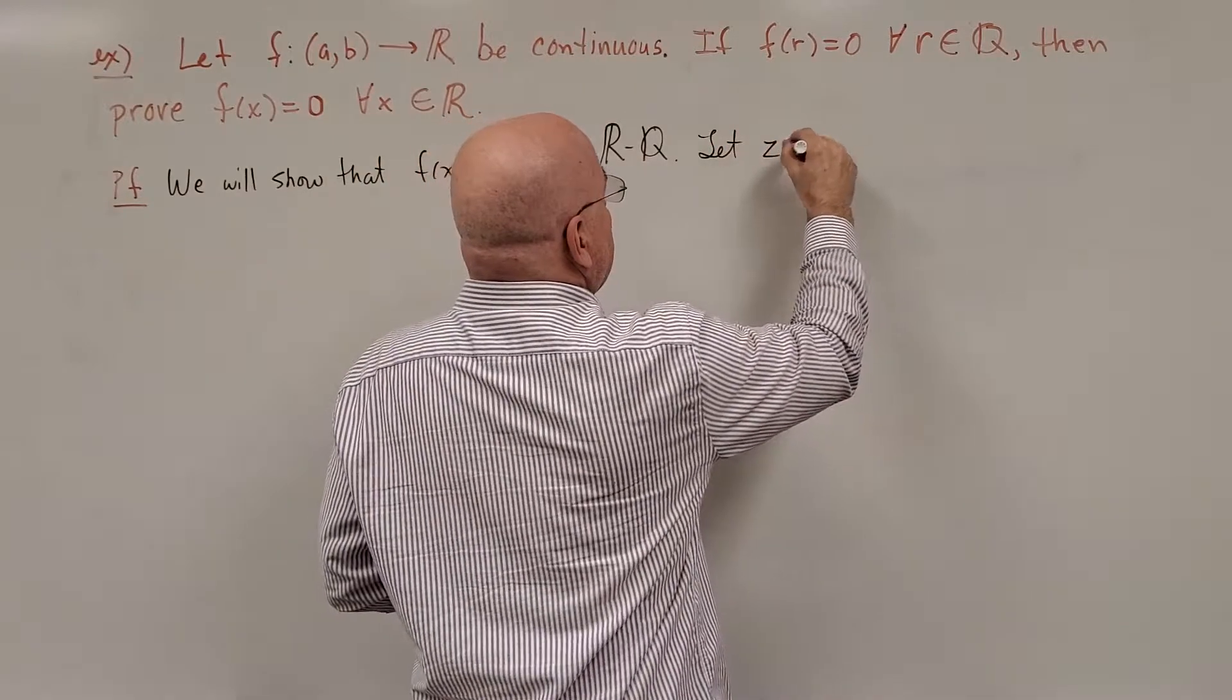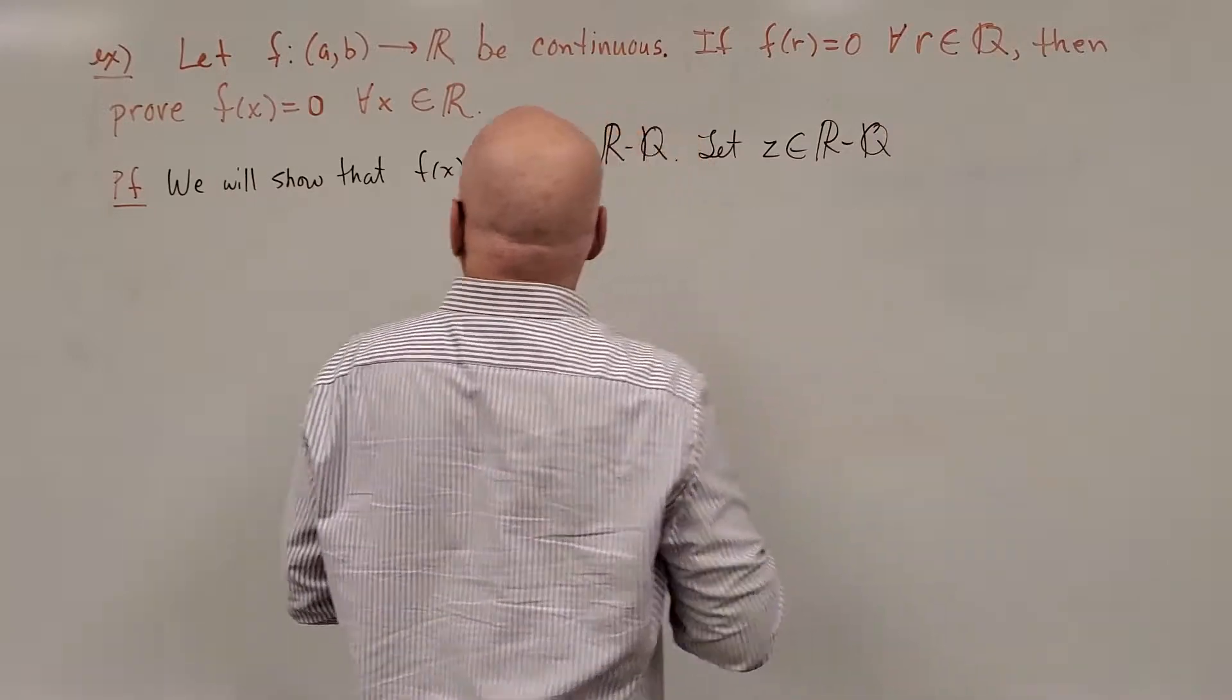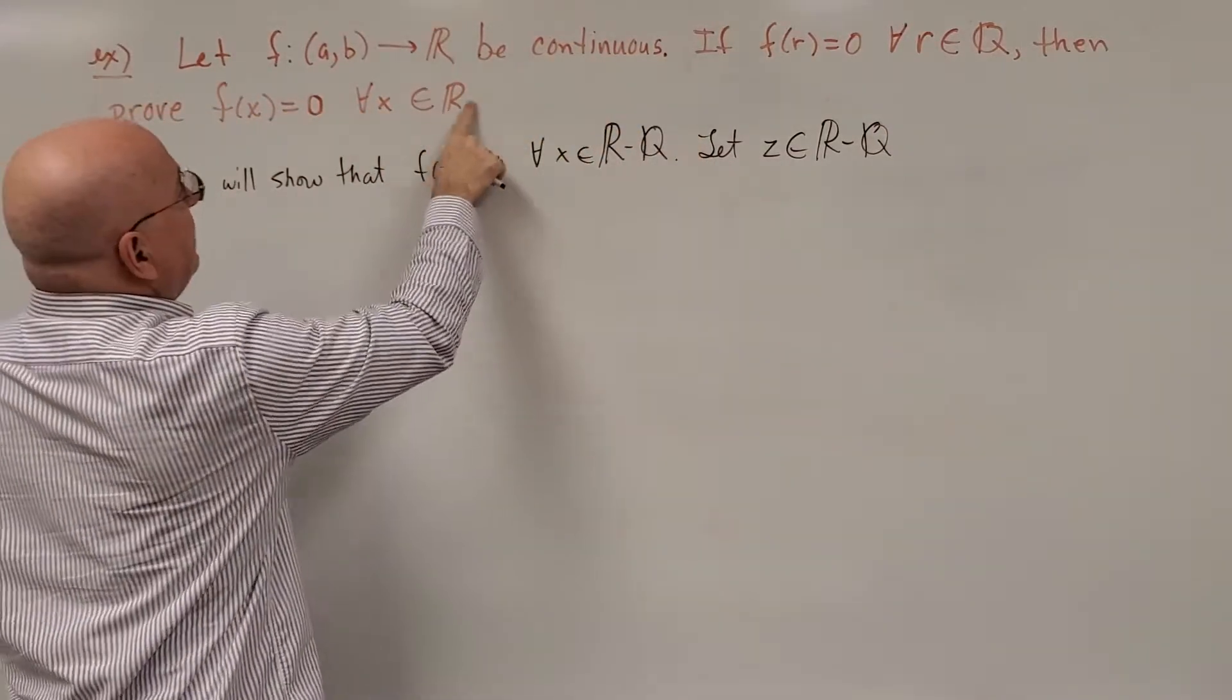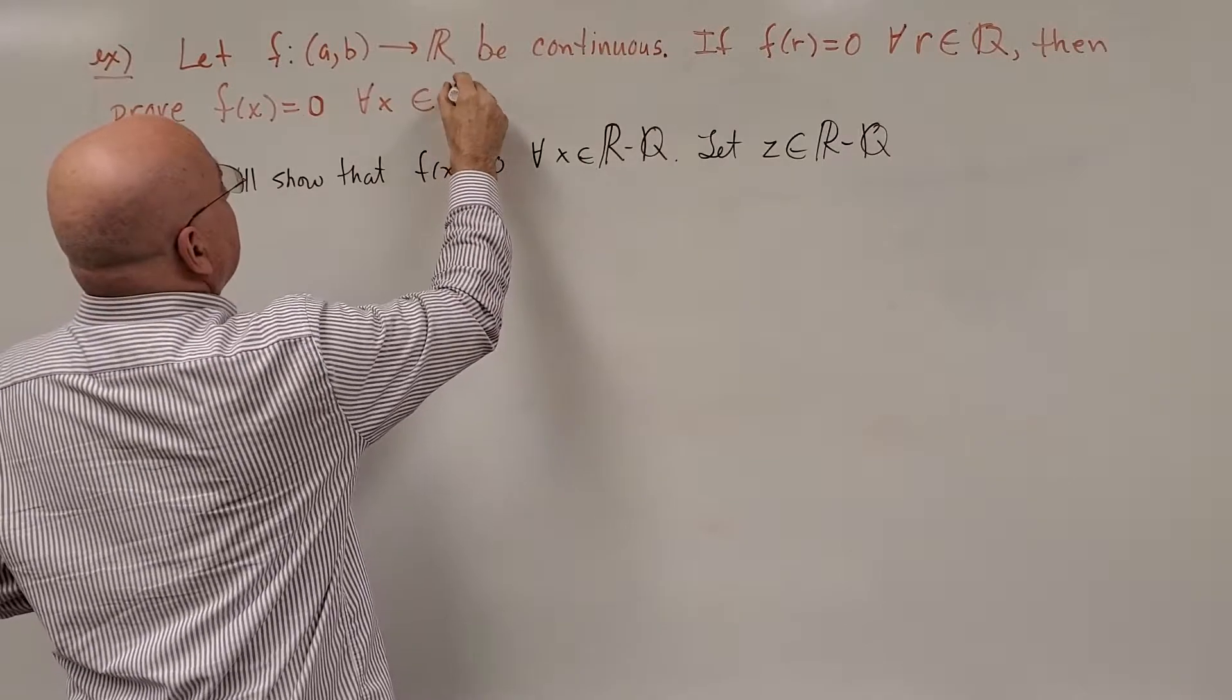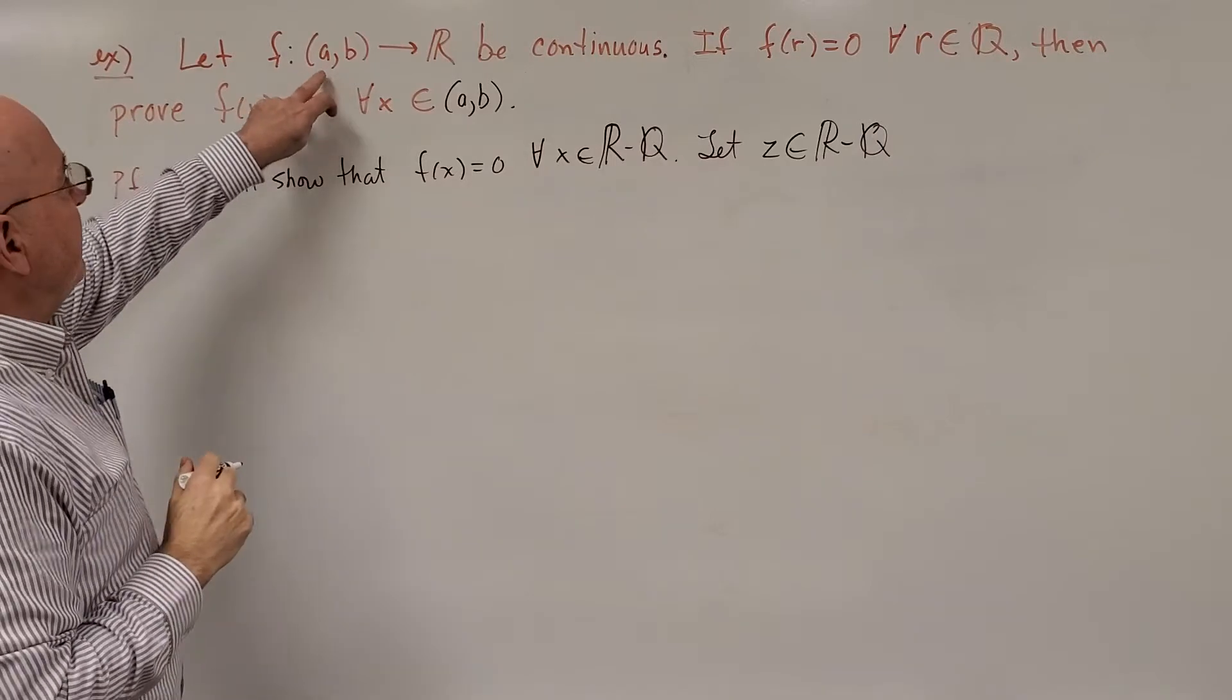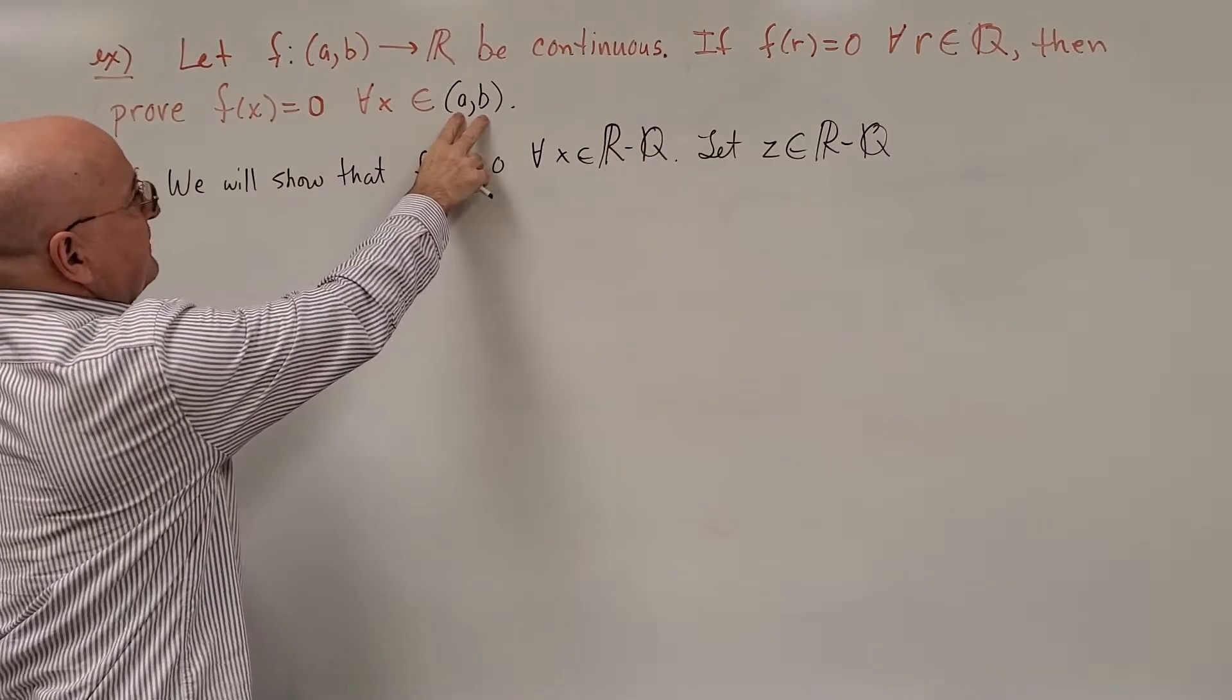So, let z be an irrational number. Well, I just noticed there's a typo up here. This should be the statement of the theorem. We're only dealing on the domain a to b, so that's all we need to prove this for.